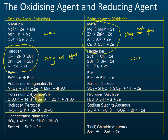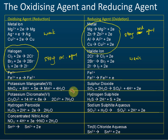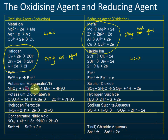But for potassium manganate and potassium dichromate, they seldom ask you to write the half equations — usually they won't ask. Of course, if you have time you can try to memorize them, but if you're really short of time, you can skip those half equations.